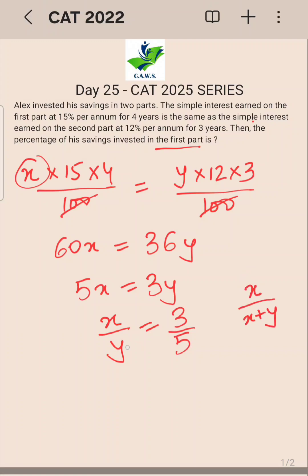So similarly here, if I ask you what is x upon x plus y, it will be 3 upon 3 plus 5, which is 8, into 100 because percentage. So your value will be 3 by 8, which is 37.5%, and that's your answer.